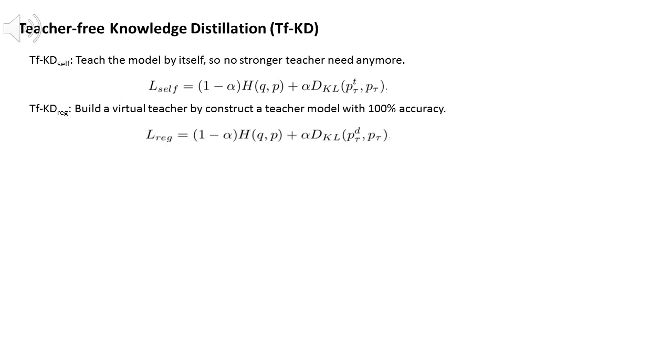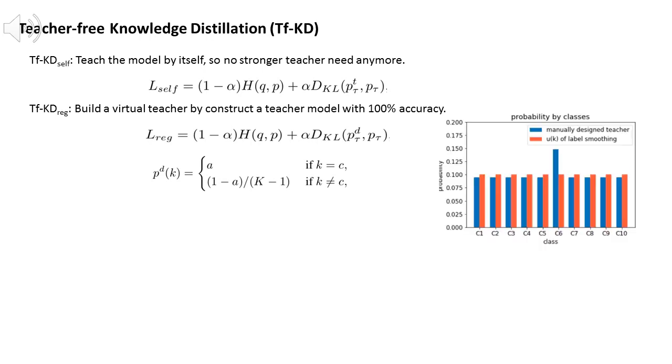The second is to use a human-designed distribution as virtual teacher to teach the student. The virtual teacher is a modification of the uniform distribution of label smoothing. But it has two differences with label smoothing: the first one is that the output of the correct class is higher than the other classes, and the second is that we use high temperature to soften the output.